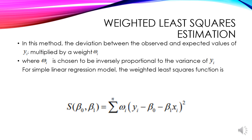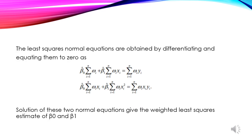Then we come to the Weighted Least Squares (WLS) estimator. In this method, the deviation between the observed and expected value of yi is multiplied by a weight wi, where wi is inversely proportional to the variance of yi. The WLS objective function is S(β₀, β₁) = Σwi(yi − β₀ − β₁xi)².